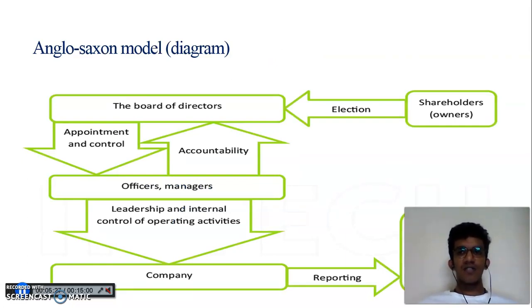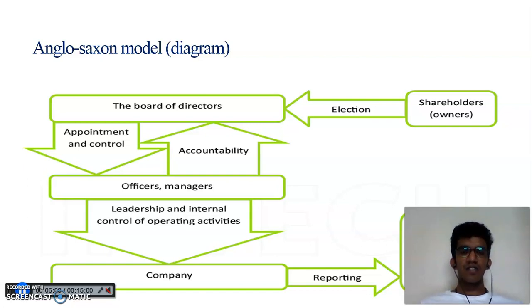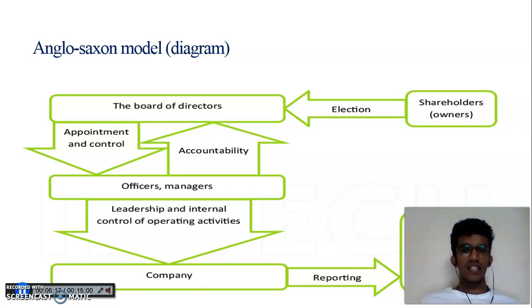In the Anglo-Saxon model, shareholders who have voting rights are the owners of the company and elect the board of directors. The board of directors appoints and controls the officers and managers who work below them. The officers and managers have the power of leadership and internal control of the company's operating activities. They are accountable to the board of directors for their performance. The company is liable to report its activities and profits to stakeholders, including employees, suppliers, creditors, committees, and government. That concludes the overview of the Anglo-Saxon model. Thank you.